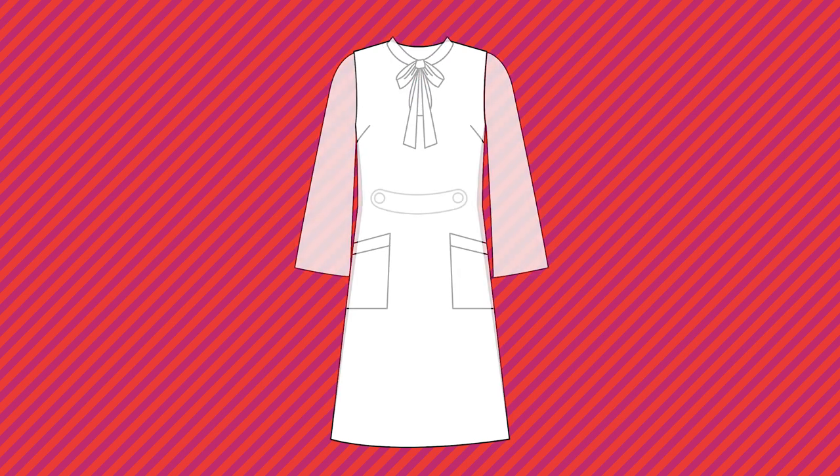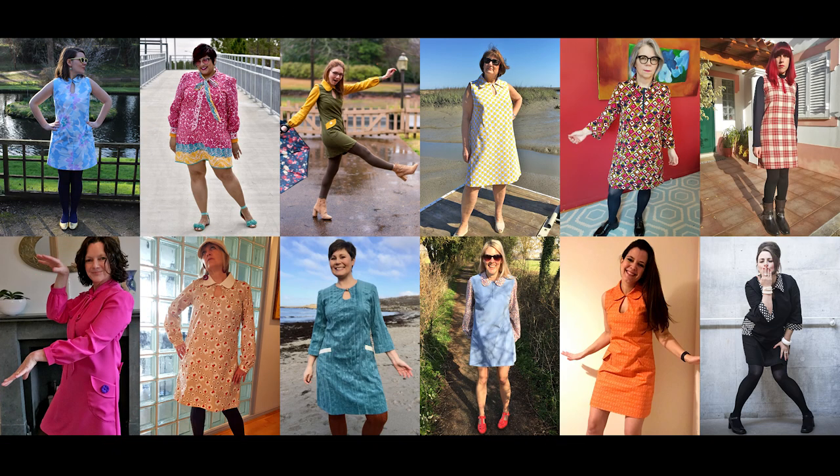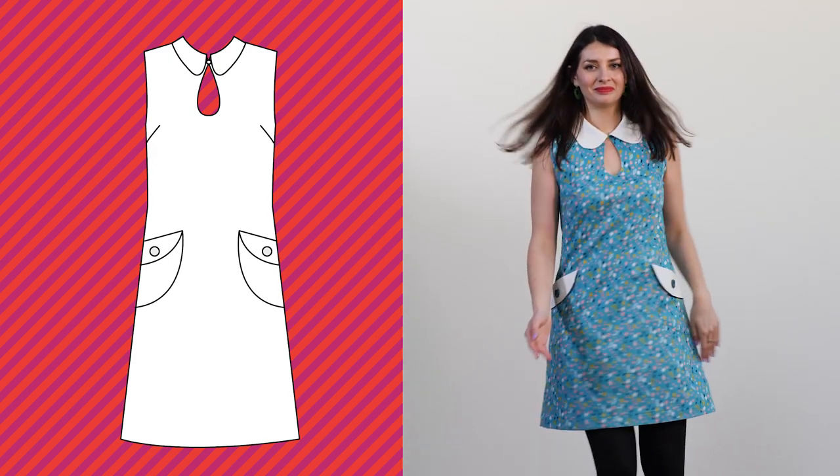Then there is an optional belt on the back of the dress and these can all be combined with the same main A-line dress shape which you can also shorten or lengthen to your desired height. The dress that I'm going to be making is the sleeveless version with the keyhole neck and rounded collar and rounded pockets.